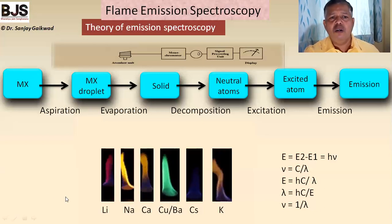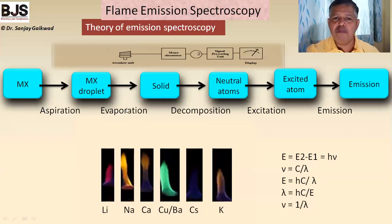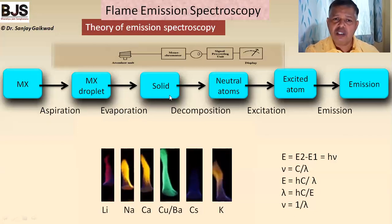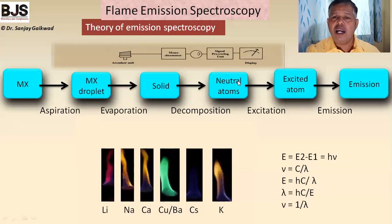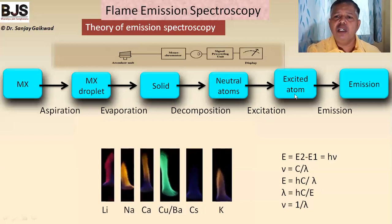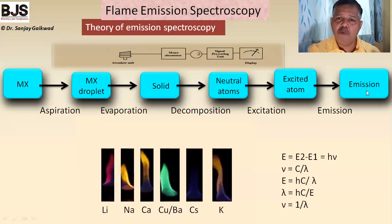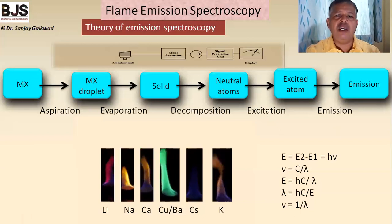Initially the solution containing metal ions is aspirated into the flame, where it forms tiny droplets (MX droplets), then gets evaporated due to the heat energy of the flame to form a solid. By further absorption of heat energy, the solid decomposes and transfers to neutral atoms. These neutral atoms absorb heat energy, go to the excited state, and the excited atoms emit radiation which we observe and measure. This is the basic fundamental principle of this technique.